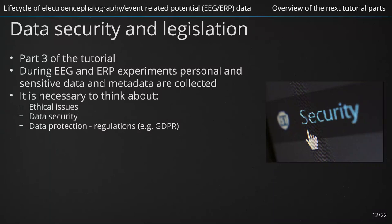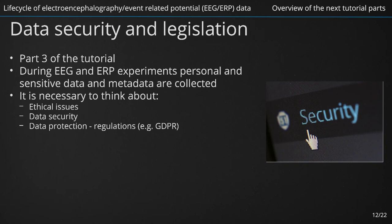To take into account ethical issues and legislation related to data security and protection is an important step not only during the experiment design phase. When performing EEG and ERP experiments, we collect personal and sensitive data and metadata that are necessary for the successful interpretation of the experiment and its results. Since collection, storage, and management of such data and metadata is potentially dangerous, we have to deal with their security and restricted access. The term security can be defined as the way we treat and share data without them being corrupted, stolen, misused, or lost in the process. In the third part of our tutorial, we will focus on security of data collected during EEG experiments, ethical issues applied to any data processing stage, and legislation that affects the way we treat personal and sensitive information.